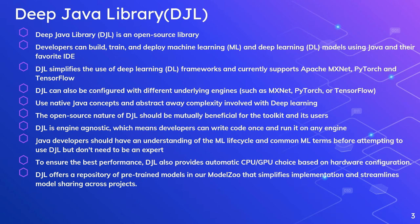DJL is an abstraction layer, so you can switch frameworks whenever you want. It can also be configured with different underlying engines — any engine from the set of supported engines. DJL uses native Java concepts and abstracts away the complexity involved with deep learning frameworks.